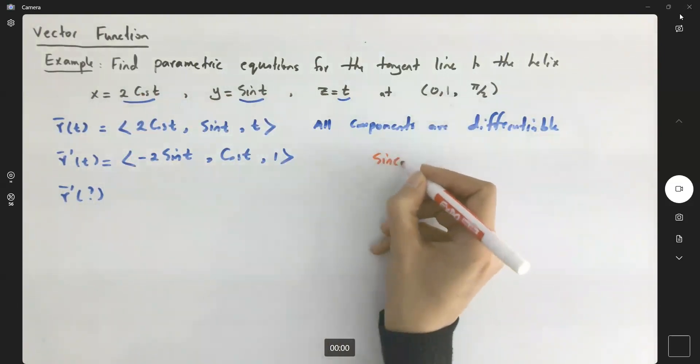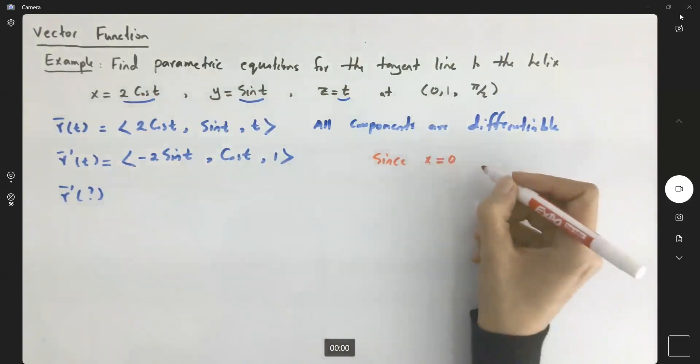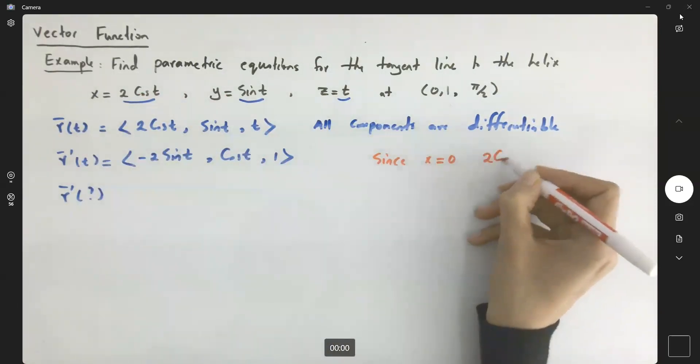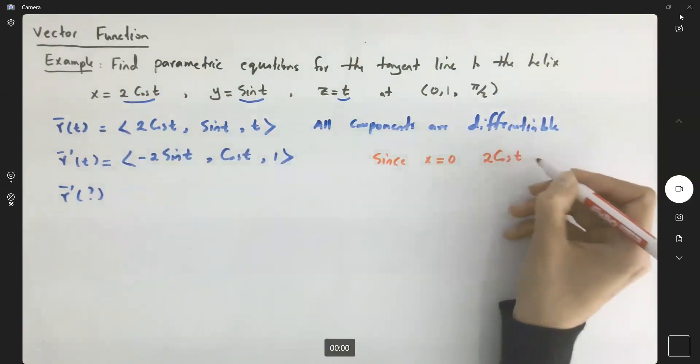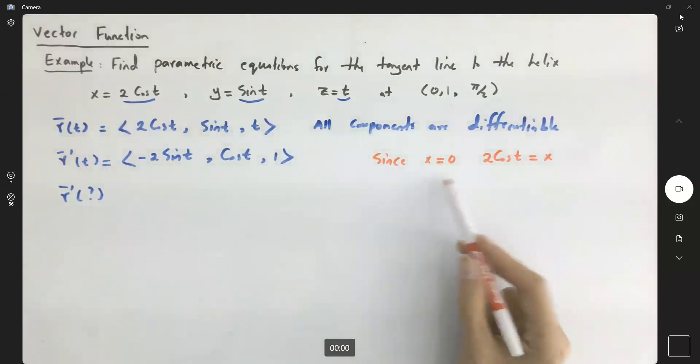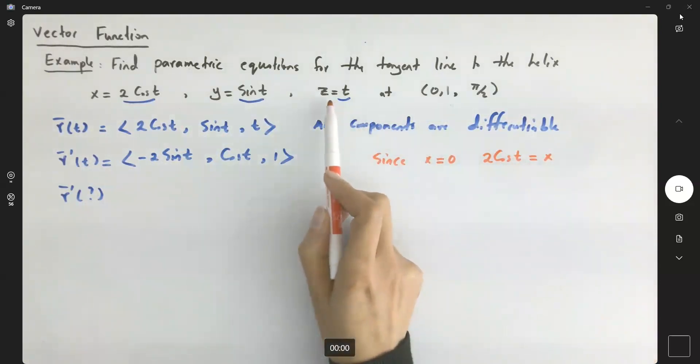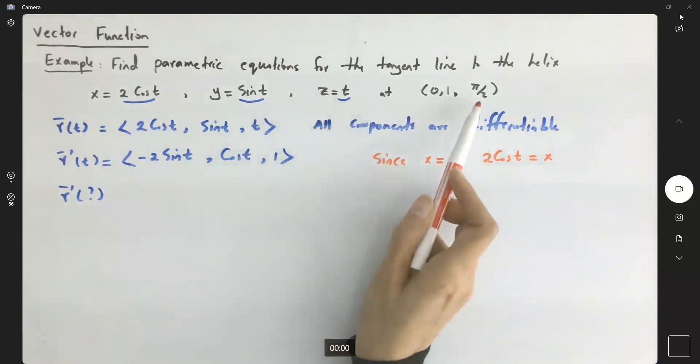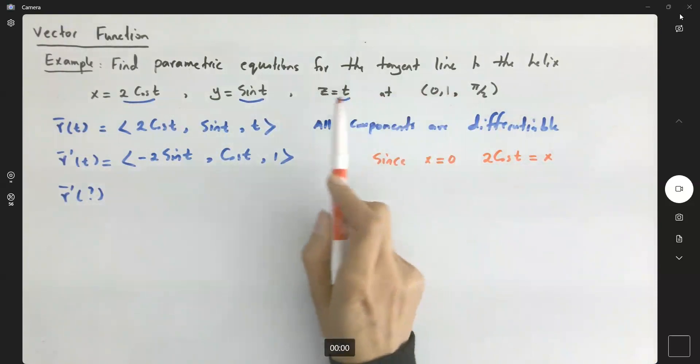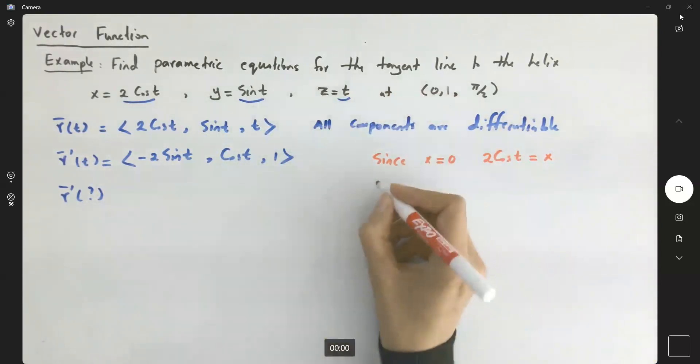Since x is equal to 0, and here you have 2 cosine t equals to 0 and find the t value. Or you might say that I have an easier function. For example, my z is equal to t. So I can just quickly set z equals to π/2, and t becomes π/2.